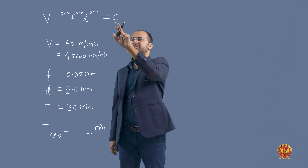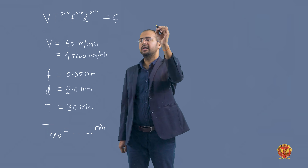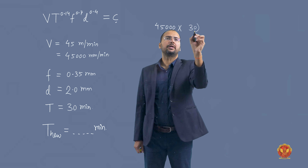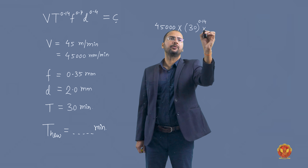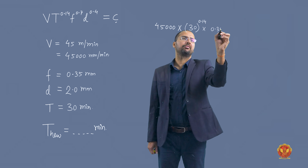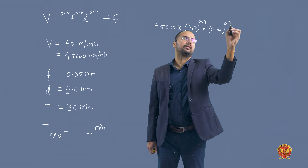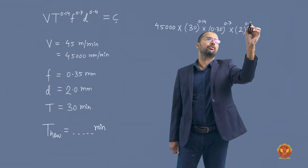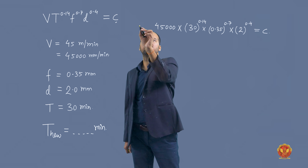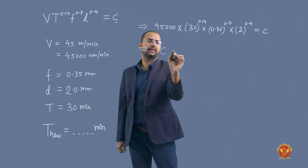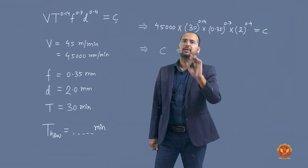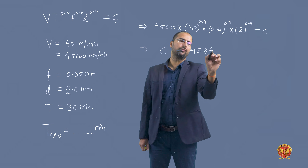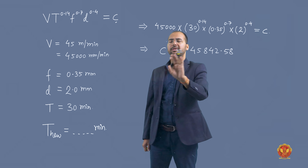Let's first find the value of constant C. So: V = 45,000, T = 30 → 30^0.14, feed = 0.35 → 0.35^0.7, depth of cut = 2 → 2^0.4, all multiplied together equals constant. Using a calculator to solve this equation, the value of constant C comes out to be 45,842.58.